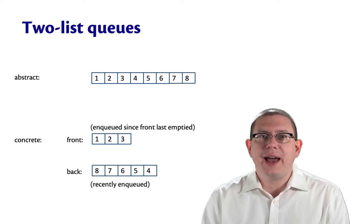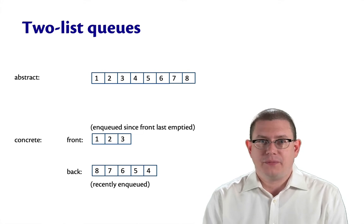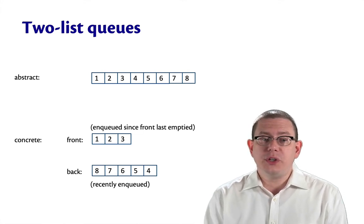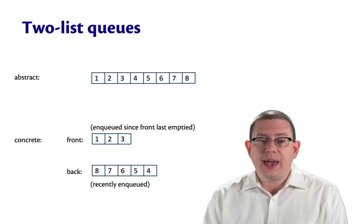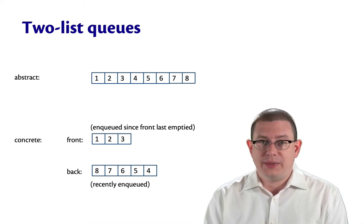Let's use amortized analysis to look at two list queues again. Remember that with two list queues, we can abstractly have a queue that had one at its head and then two and then eight all the way at the end.